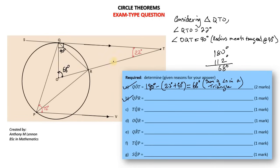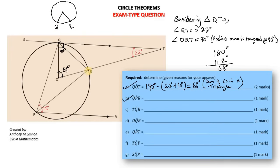Because we found angle QOT, which is the same as angle QOR since it's along the same line, we want to recognize that this angle is the center angle in QOT or QOR. So now we know this angle, and if you pay attention, you recognize it's the angle at the center. We remember the theorem: if we have an angle at the center standing on two points, the angle formed at the center is 68 degrees.